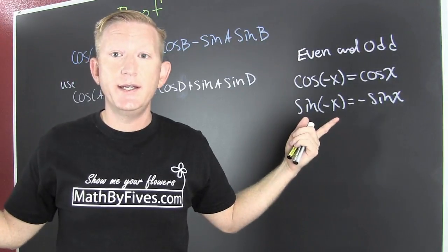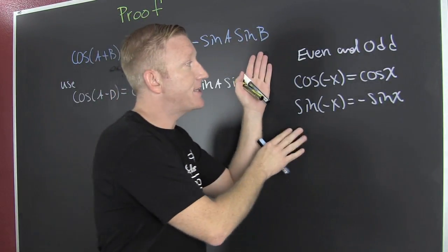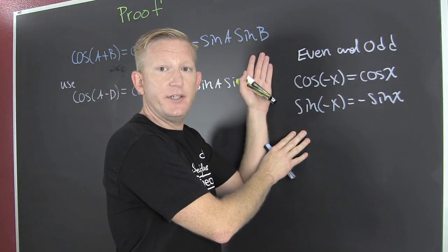So what are we going to need? We're going to need these identities. Even and odd.